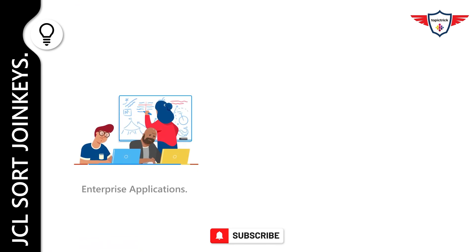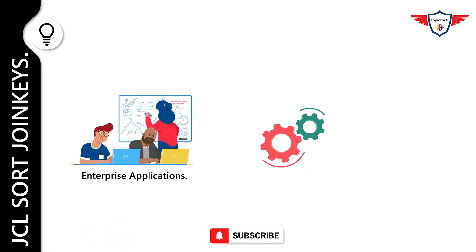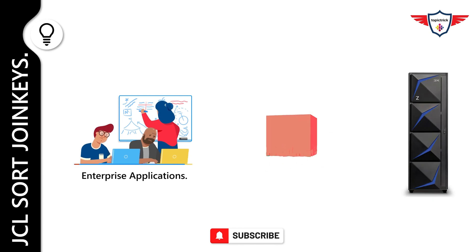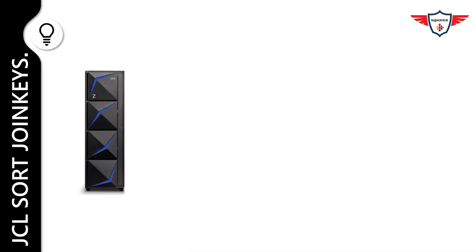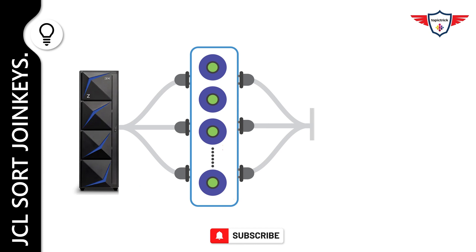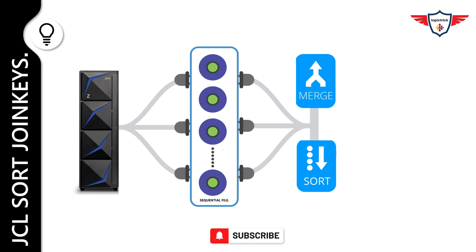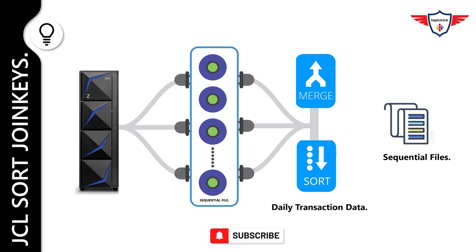The majority of the world's enterprise revenue and profit-producing applications, data, and transactions remain on mainframe systems. Sequential files are still commonly used in mainframe to store transaction data. Before the records in these files can be processed, they often need to be sorted or merged into an appropriate sequence — for instance, sales transactions that need to be sorted into customer or item number sequence before they can be used to prepare reports or update master files.